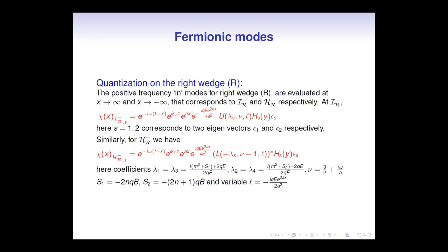We quantized our field on the right wedge. For psi-minus and HR-minus modes, the form of chi is given accordingly. For IR-minus, chi is given as a function of U, H_s, and exponentials, where U is the confluent hypergeometric function and H the Hermite polynomials. For HR-minus in-modes of the particle, we have HR-minus as a function of L and H_s, where L is the generalized Laguerre function and H_s are Hermite polynomials. The coefficients lambda, nu, and L are functions of charge, electric field, magnetic field, and mass of the field.